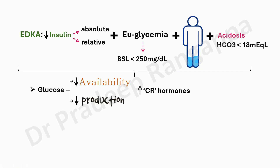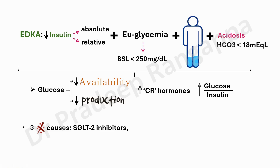Like DKA, there is an increase in counter-regulatory hormones and a derangement in the glucose-to-insulin ratio. There are three important causes of EDKA to think of. Any diabetic patient — look into their drug chart whether they are on SGLT2 inhibitors, because AHA guidelines now suggest their use to reduce cardiovascular risk, and this is leading to an increase in the risk of EDKA. The use of SGLT2 inhibitors is the primordial cause of the rise in EDKA. Pregnancy is another important cause, as is starvation.